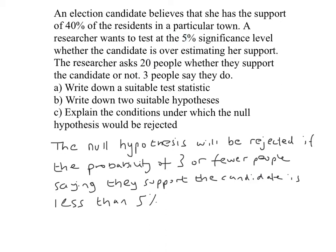3 out of 20 is a small number — much smaller than expected. 40% of 20 is 8, and we've got 3. It seems unlikely, but it is clearly still possible. The point at which we reject the null hypothesis is if the probability of getting this result is less than 5%. Sometimes the significance level is 1% or 10%, but here it's 5%. Let's find out the probability of getting 3 out of 20 when 40% of the population would vote for the candidate.